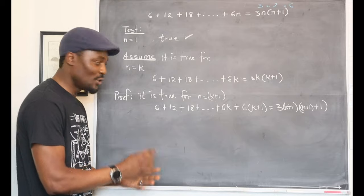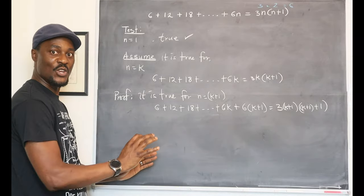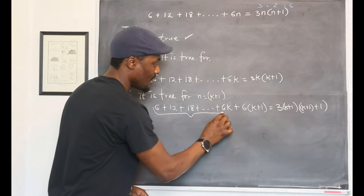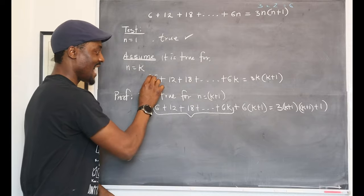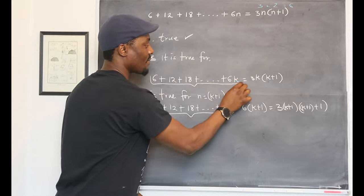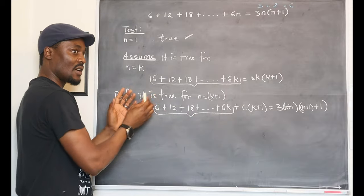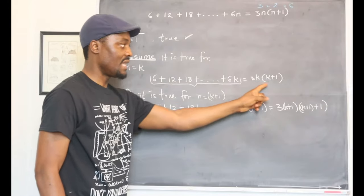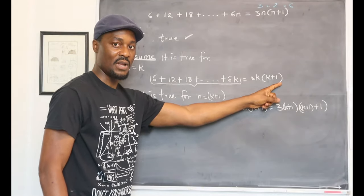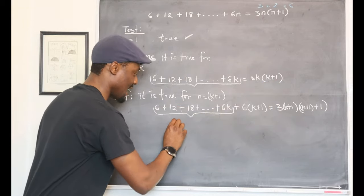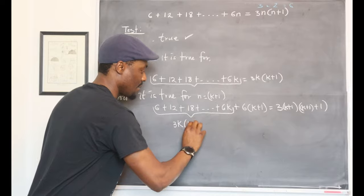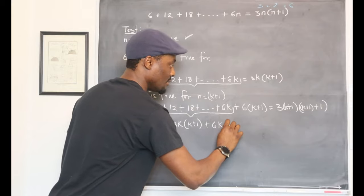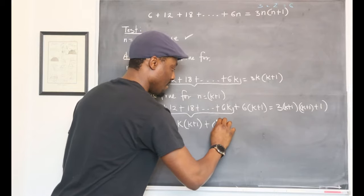The first thing you want to do is get rid of this long tail. You don't want it in your proof. So you want to replace all of these. You see that? That looks exactly like this. And we said all of these, remember that's our assumption, is equal to this. So get rid of this long tail and replace it with what you have in the previous assumption. So we're going to replace this and write 3k into k plus 1 plus 6 into k plus 1.